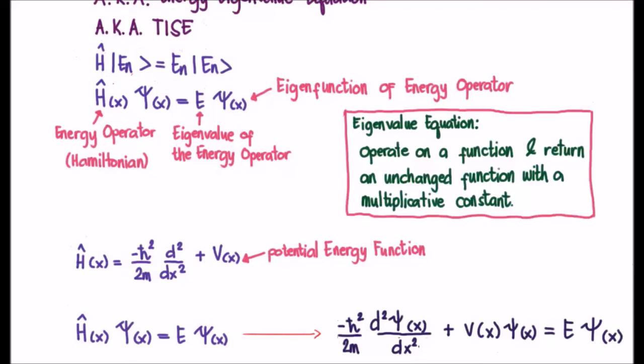On the bottom right of your screen we have the time independent Schrödinger equation written as a second order differential equation. Now if we want to be technical, it's a second order linear ordinary differential equation with constant coefficients.